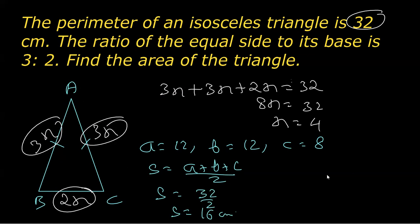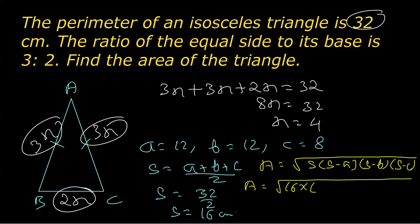Now, once we got the semi-perimeter, the next thing that we do is to find the area. And the formula for area of an equilateral triangle is square root of s times s minus a times s minus b times s minus c, where a, b, c are the length of the sides and s being the semi-perimeter. Now, what we need to do is simply plug in the values of s, which is 16. And then 16 minus a, which is 16 minus 12, and 16 minus b, that is 16 minus 12 again. And finally, it is 16 minus c, which is 16 minus 8.